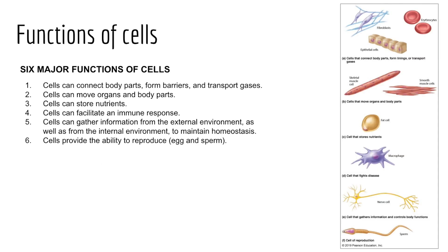Cells vary enormously based on function, and we have six major functions of cells. First, cells can connect body parts — they form barriers, they transport gases. Second, cells can move organs and body parts. Third, cells store nutrients. Fourth, cells facilitate an immune response. Fifth, cells can gather information from the external environment, whether outside or within the body, in order to control function and maintain homeostasis. And lastly, cells provide the ability to reproduce. We will cover these one by one throughout the school year as we look at the various systems of the body.